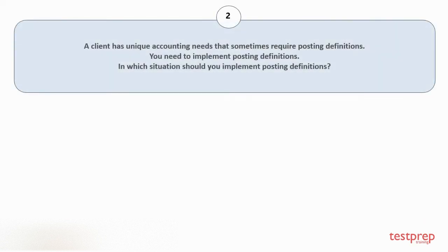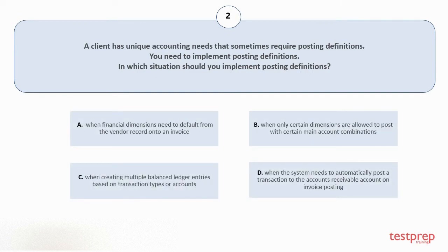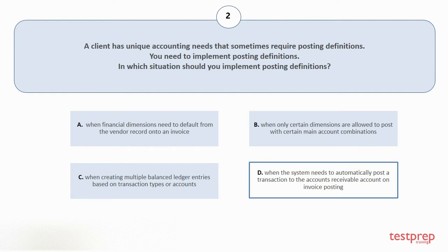Question number 2: a client has unique accounting needs that sometimes require posting definitions. You need to implement posting definitions. In which situation should you implement posting definitions? Your options are: A. When financial dimensions need to default from the vendor record onto an invoice. B. When only certain dimensions are allowed to post with certain main account combinations. C. When creating multiple balanced ledger entries based on transaction types or accounts. D. When the system needs to automatically post a transaction to the accounts receivable account on invoice posting. The correct answer is option D.